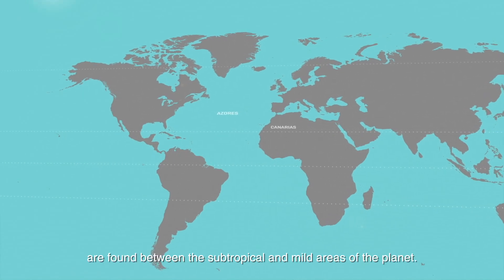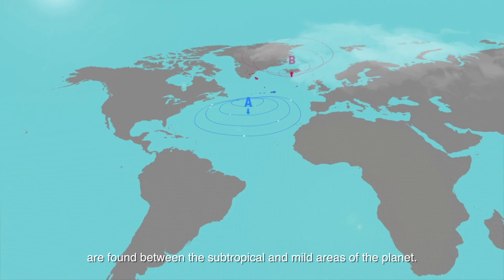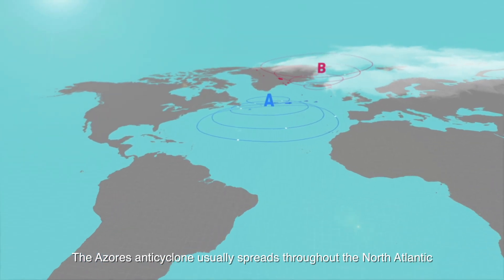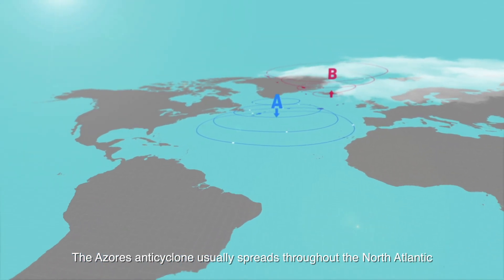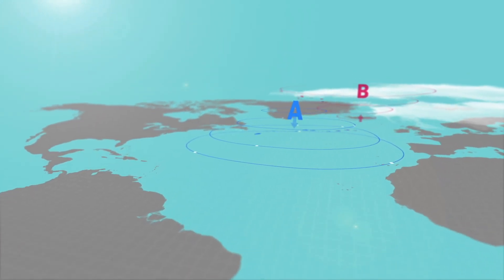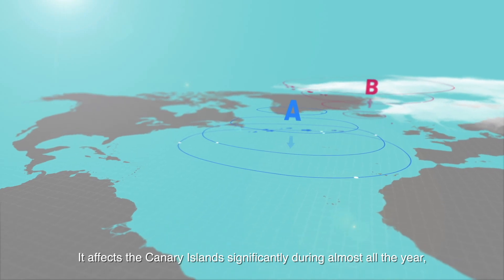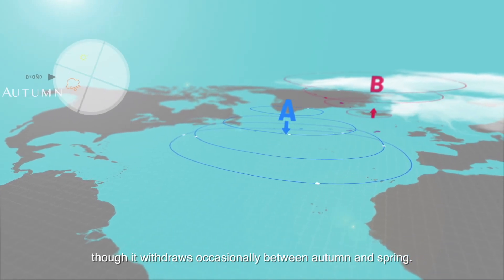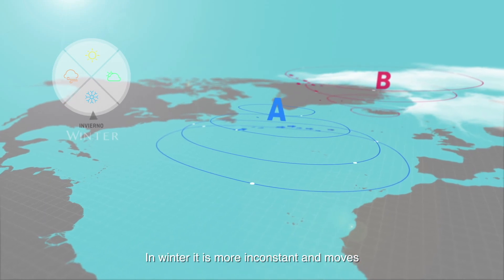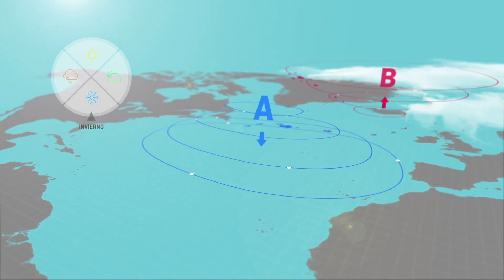Anticyclones or high pressure centers are found between subtropical regions and the cooler areas of the planet. The Azores anticyclone usually spreads throughout the North Atlantic and focuses on the Canary Islands. It affects the Canary Islands for most of the year, though it withdraws occasionally between autumn and spring. In winter it is more inconsistent and moves from north to south depending on the position of the Atlantic depression.